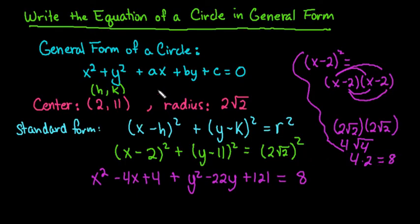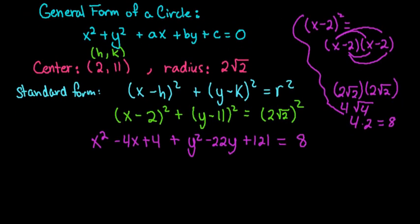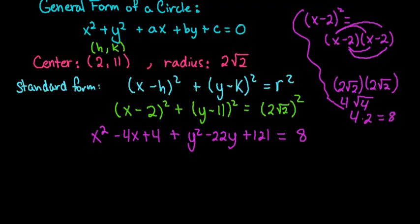We are still not done because in general form, it does have to equal 0. So we want to get it in this form where we have our x squared term first, followed by our y squared term. Then we want our x term, ax. Remember that a is just any real number, so that's our coefficient on x. So this would be our x term, so we would have minus 4x.